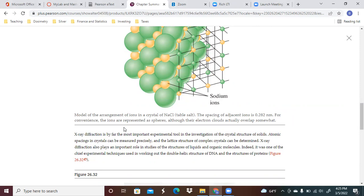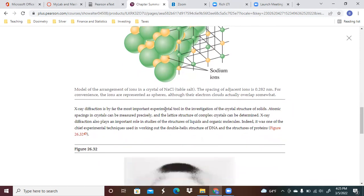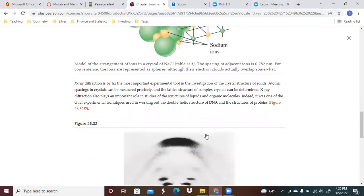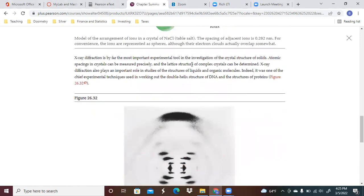So for convenience the ions are represented as spheres, although their electron clouds actually overlap a little bit. And this is the most important experimental tool in the investigation of the crystal structure of solids. Atomic spacing of crystals can be measured precisely and the lattice structure of complex crystals can be determined.